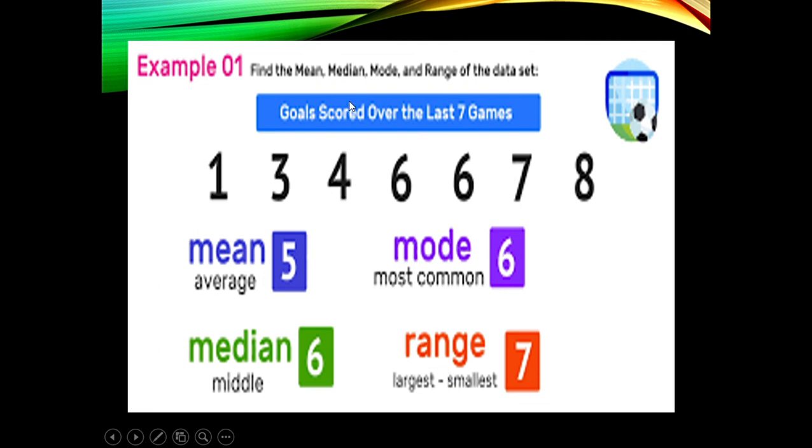And how do we get the range? The largest number, which is 8, minus the smallest number, this is 7. So that is just an overview of this mean median mode range. Thank you very much for listening.